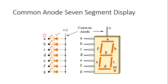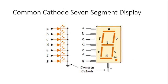For example, to display the digit 1, you have to turn on segment B and segment C. So you make segment B equal to 0 and segment C equal to 0, and all other segments are made 1. When you send this code to the common anode 7-segment display, it will turn on segments B and C and ultimately display the digit 1.